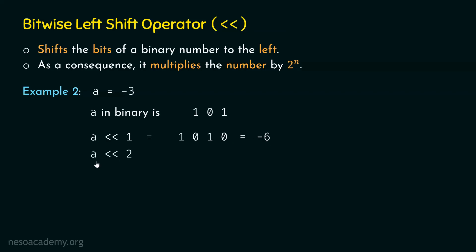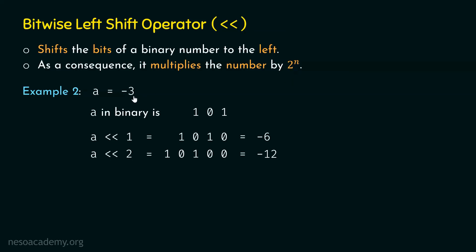Now let's perform a left shift 2 on minus 3. This time we get 10100, and all the bits are shifted left, giving us minus 12 in decimal. This time n is 2, so we need to multiply minus 3 by 4, which equals minus 12.